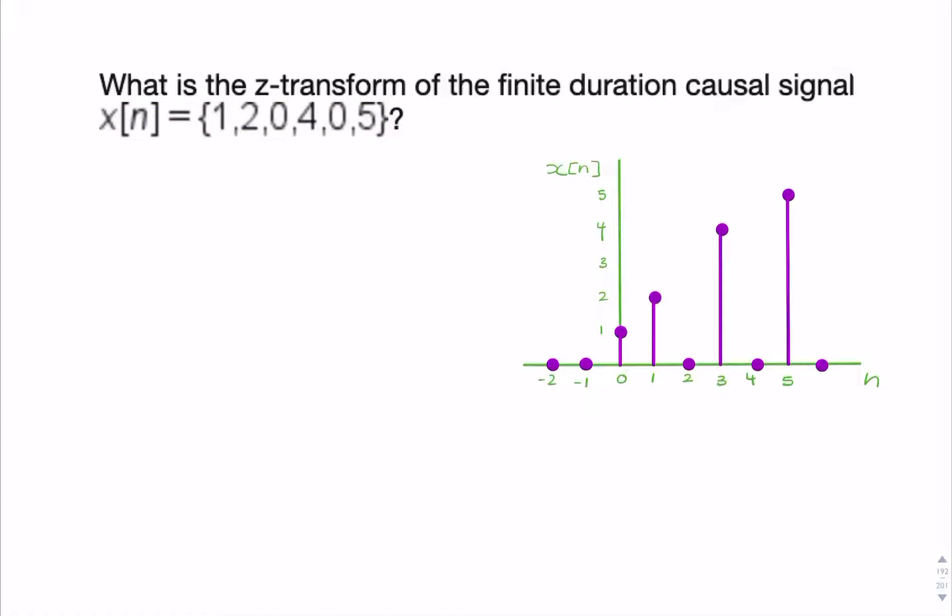So the easiest way to do a z-transform like this is to apply the definition. So we're adding up all the terms from 0 to infinity, and each term is multiplied by z to the power minus n. So each of these terms will be multiplied by z to the power minus n.